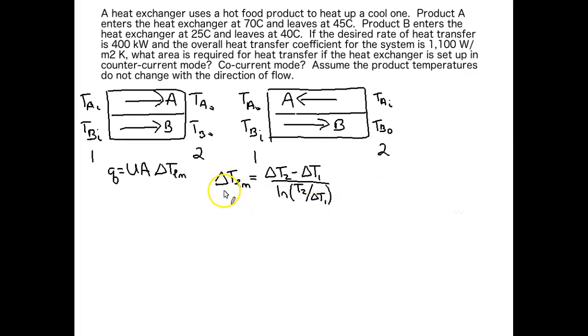There's our log mean temperature difference equation. So you can see now why we had to label the sides one and two because we have delta T2 versus delta T1. This does not mean delta T for product A and delta T for product B.